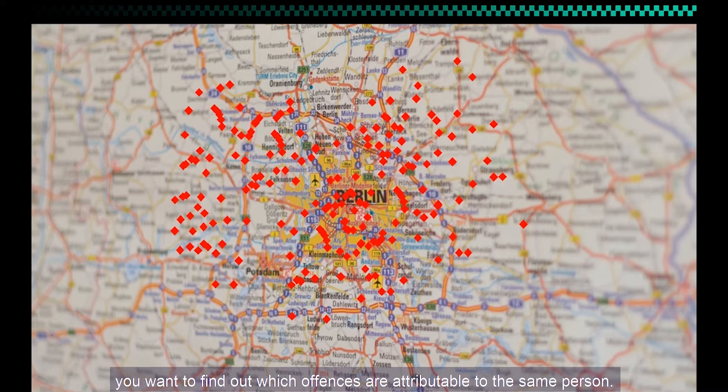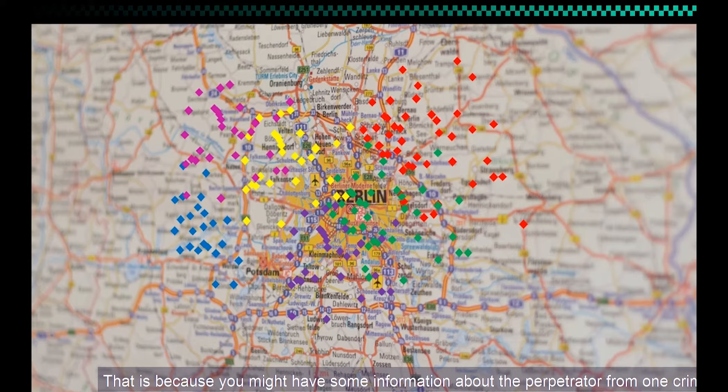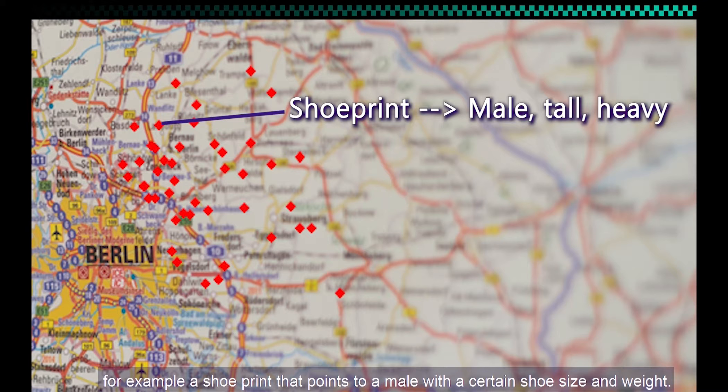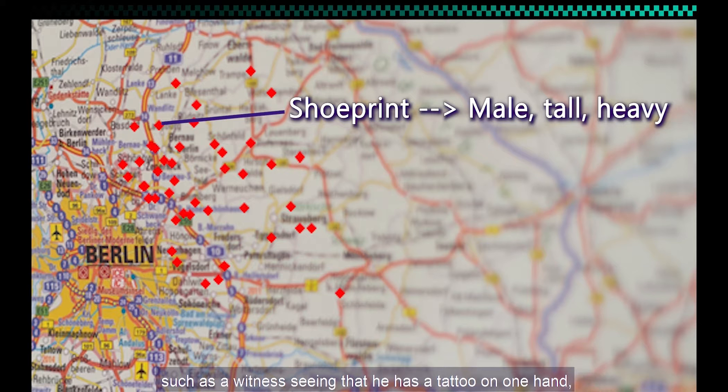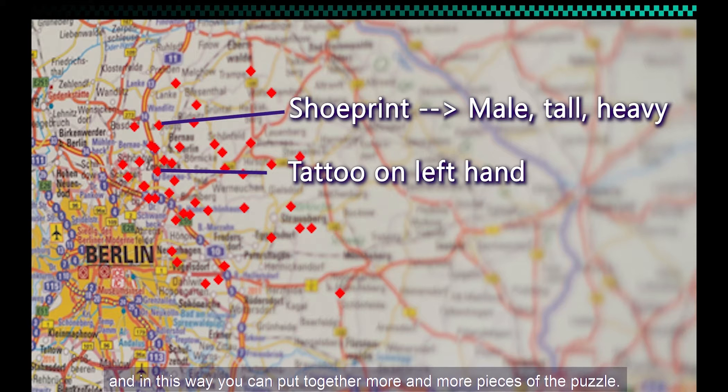That is because you might have some information about the perpetrator from one crime — for example, a shoe print that points to a male with a certain shoe size and weight. You can then see which other offences you think are linked to that same person. Perhaps some of those have other information about the burglar, such as a witness seeing that he has a tattoo on one hand. In this way, you can put together more and more pieces of the puzzle.